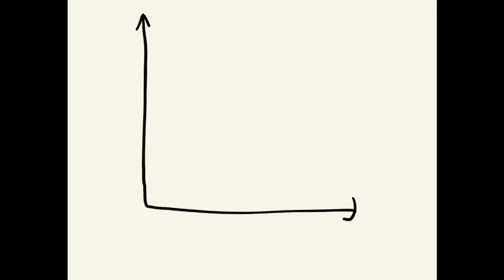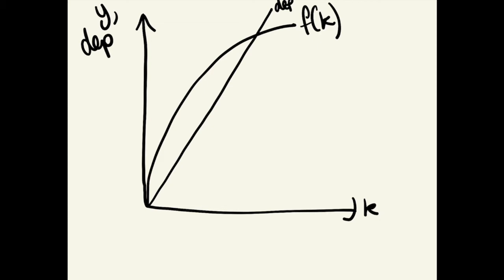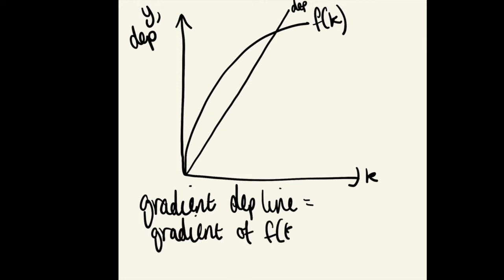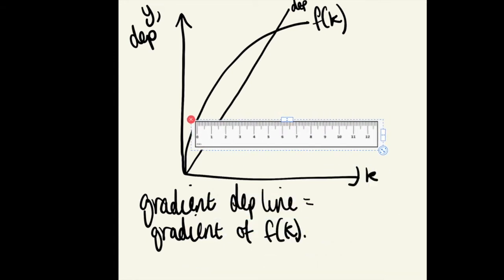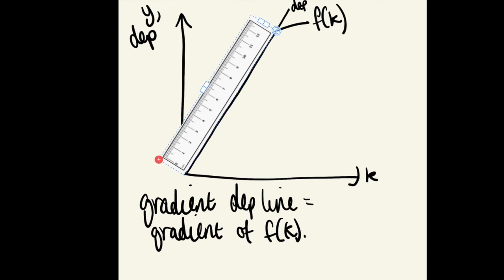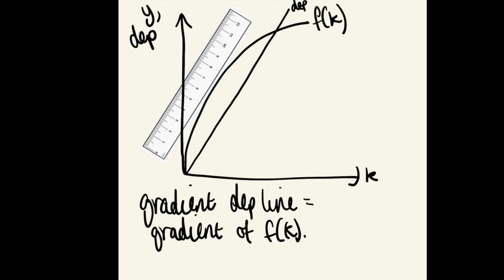The last bit of maths before we get into the model: let's say we have two graphs — a curve f(k) and a straight line called depreciation. What we're trying to find is the point at which the gradient of the linear depreciation line equals the gradient of our f(k) curve. The easiest way is to take a ruler, line it up with the straight line, then drag it back until it just touches the curve. That point where it just touches is where the two gradients are equal — I've marked it as k star.